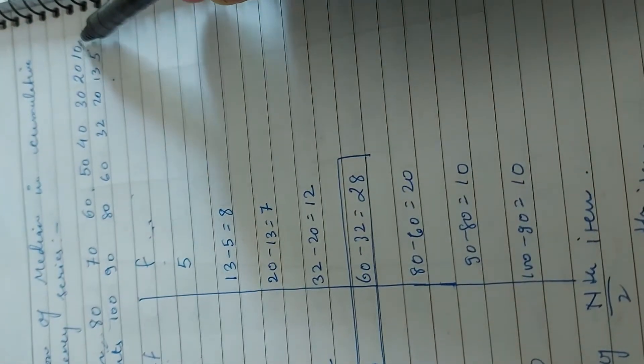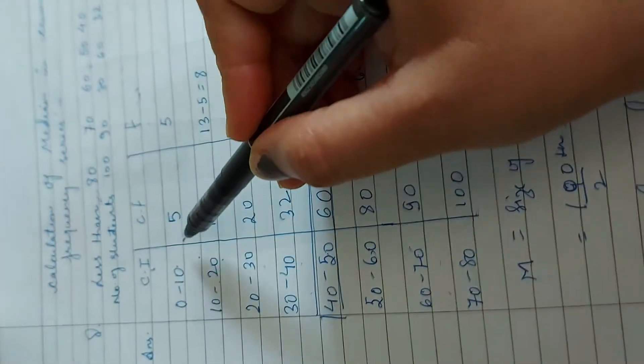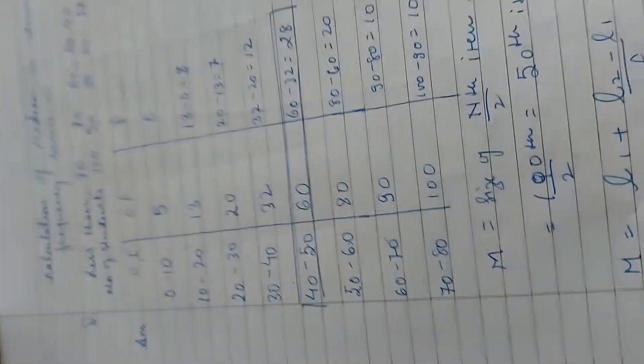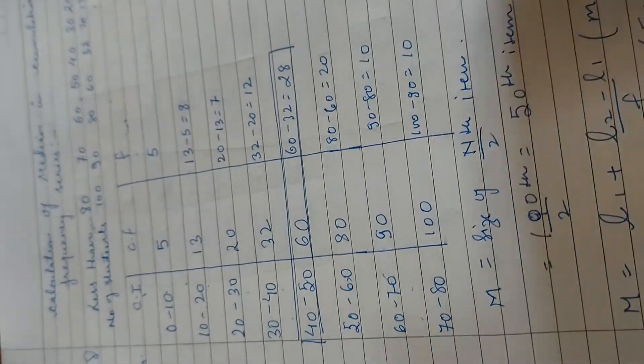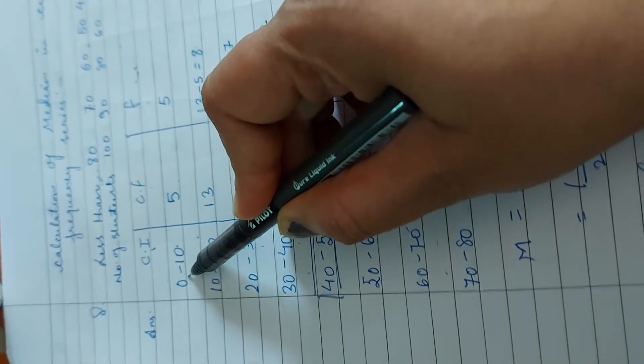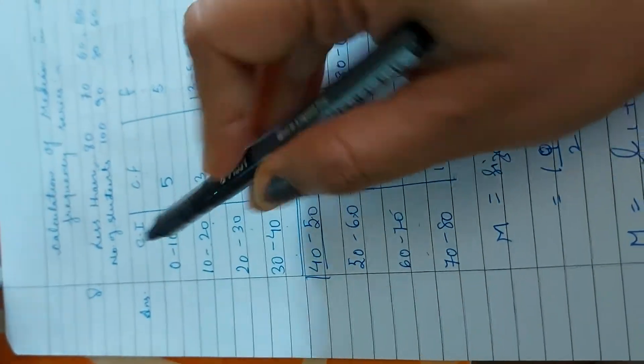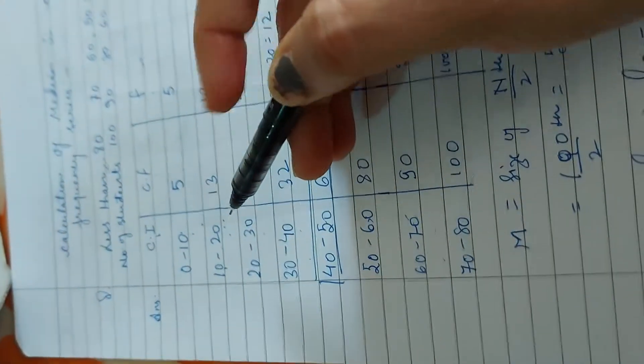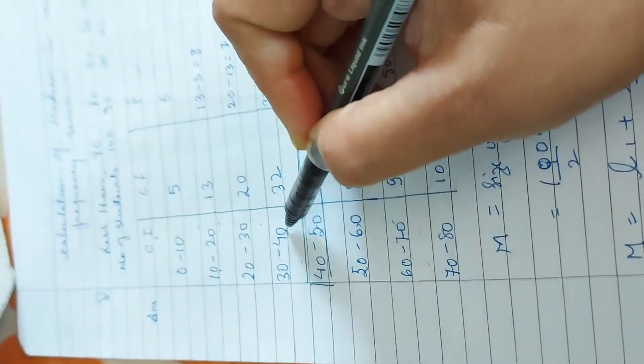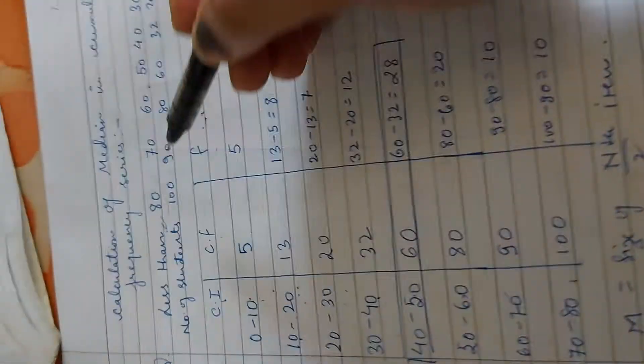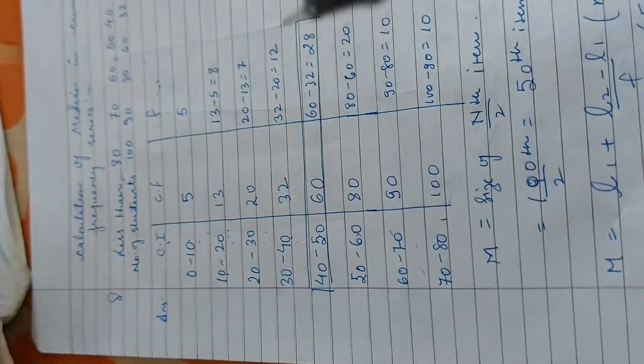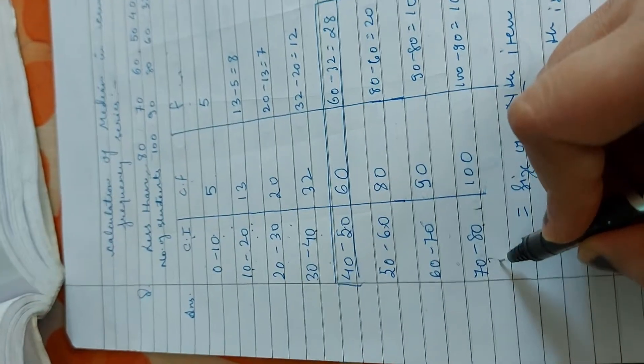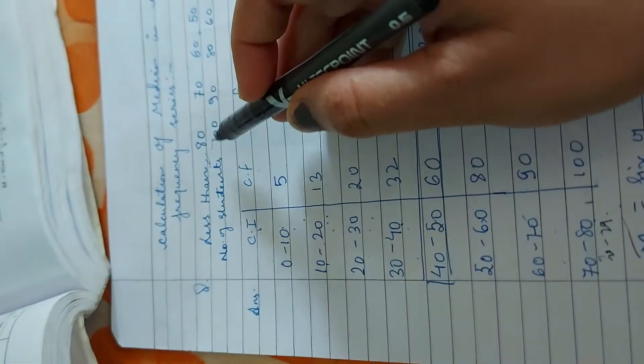Yaha aap dekh rahe ho ki last number hai 10. So we start with this 10. What is this class interval? Aapko bas yeh dhyan rakhna hai ki less than hai. Aap jab bhi apna class interval banaoge, to aap ko hoga less than 10. Sabse pehle less than 10 hai, to jab hum calculate karte hai, to 0 se 10 ke beech ka number, less than 10. So 0 to 10, then less than 20 means 10 to 20. Less than 30 means 20 to 30. Less than 40 means 30 to 40. Less than ka matlab hai ki sabse pehle ke beech mein.